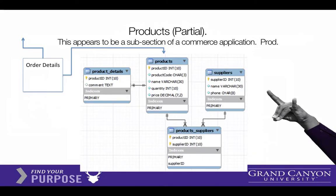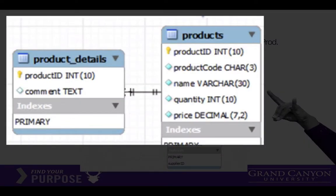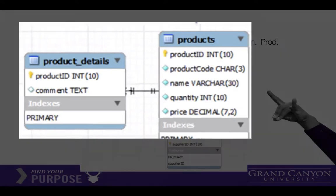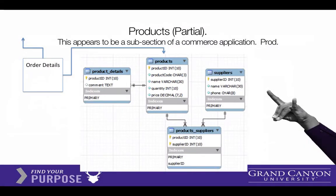Here's another slide that shows products, and I think it's just a partial piece of a larger app. If we focus in on the products table, you can see that for some reason they've decided to take the product details and make a second table out of it — so it is a one-to-one relationship. You don't see those very often. A one-to-one relationship here means there's comment text for each product, though you could just as easily include comment text as part of the regular table.